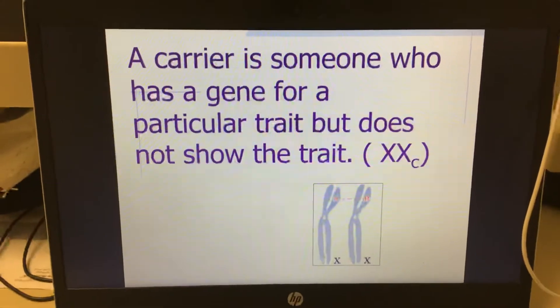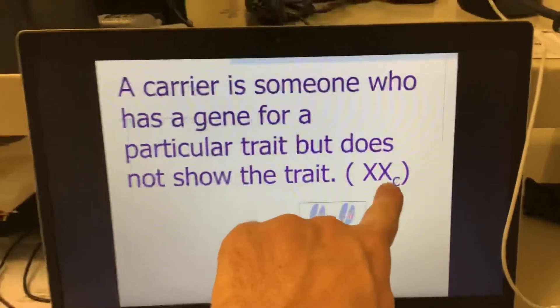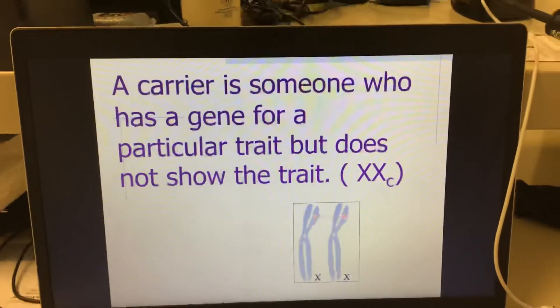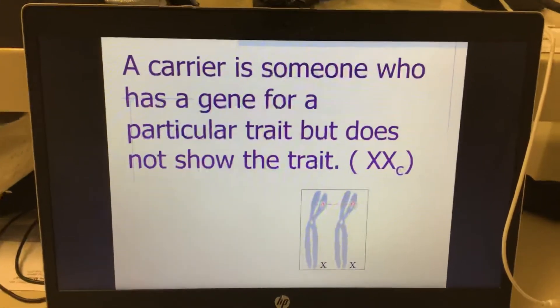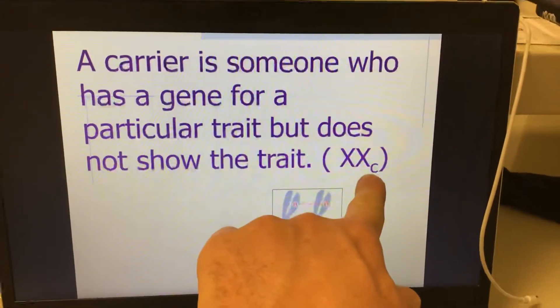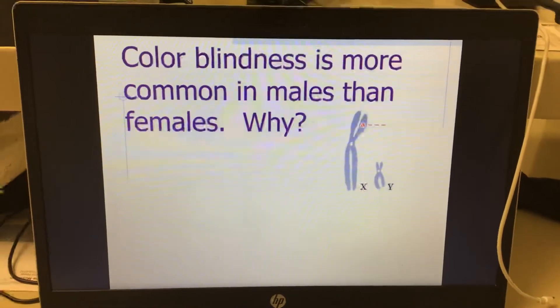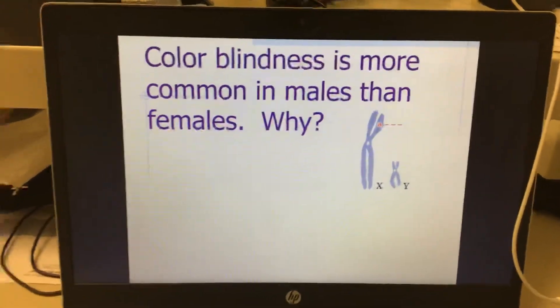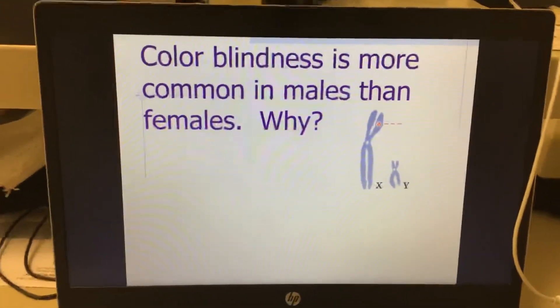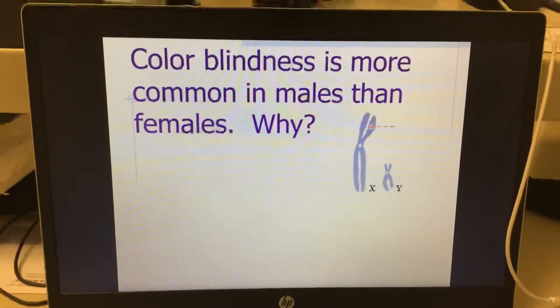If I'm going too fast, you can always pause. This is a female carrier of color blindness. It's got one healthy X and one that has the colorblind gene. Color blindness is more common in males than females. Any ideas why?